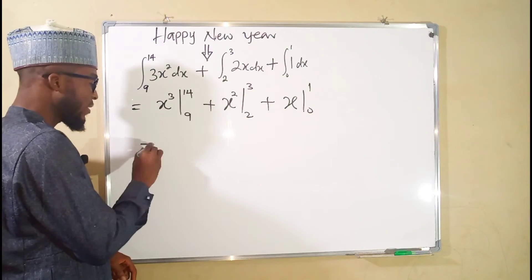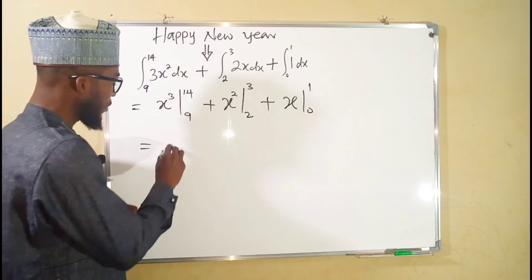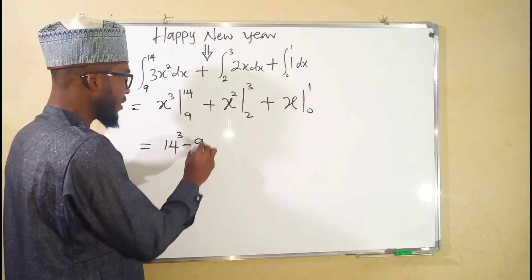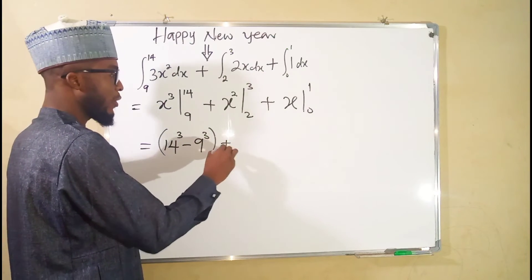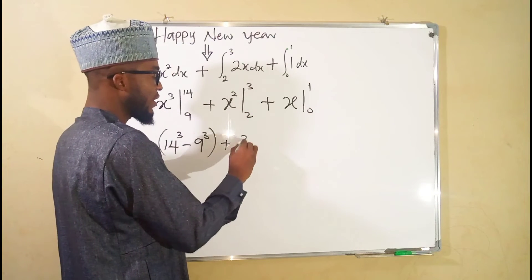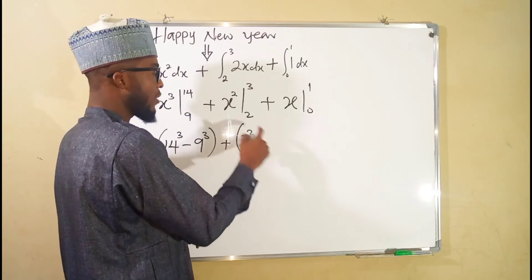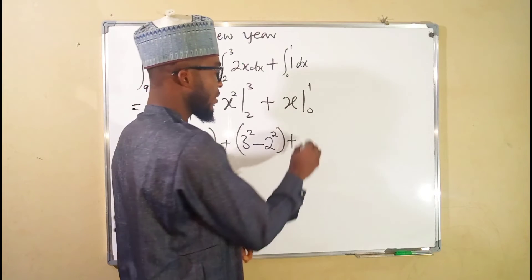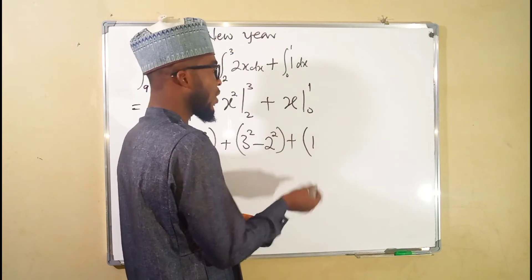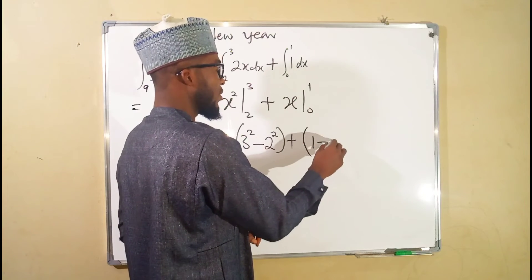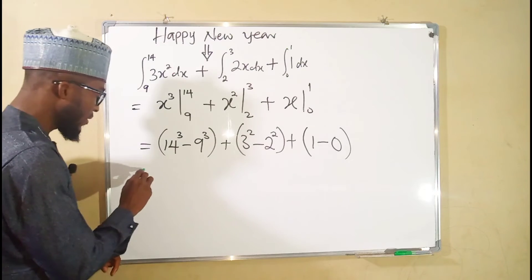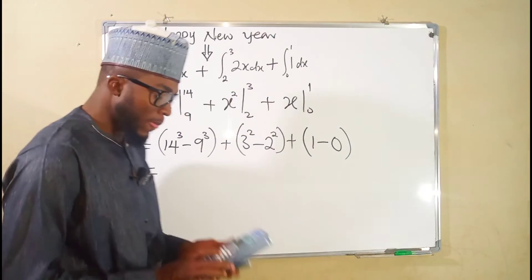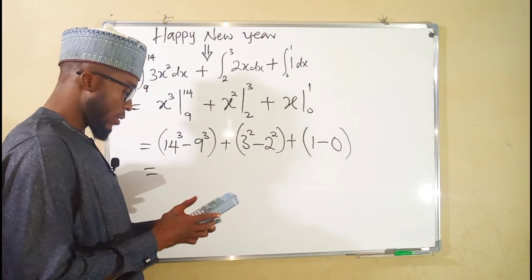This is equal to: when x is 14, we have 14 to the third power, minus the lower bound when x is 9, we have 9 to the third power. Then plus when x is 3, we have 3 to the second power, minus when x is 2, we have 2 to the second power. Plus when x is 1, we have 1 to the first power which is 1, minus when x is 0, we have 0.